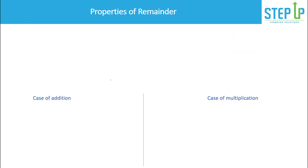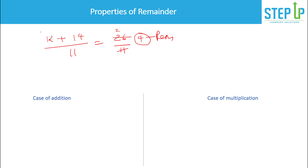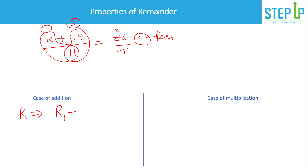Now let's look at the addition property of remainders. If you have (12 + 14) divided by 11, that's 26 ÷ 11, and the remainder is 4. But you could also take the remainders separately: 12 ÷ 11 gives remainder 1, and 14 ÷ 11 gives remainder 3, then 1 + 3 = 4. So in case of addition, your final remainder is the sum of the individual remainders.